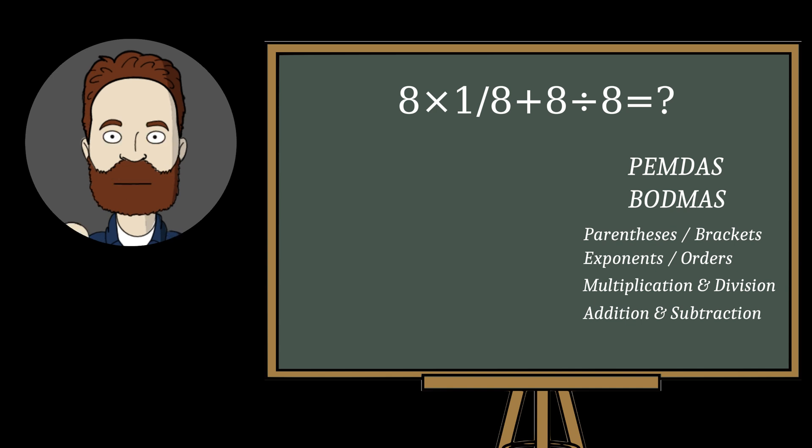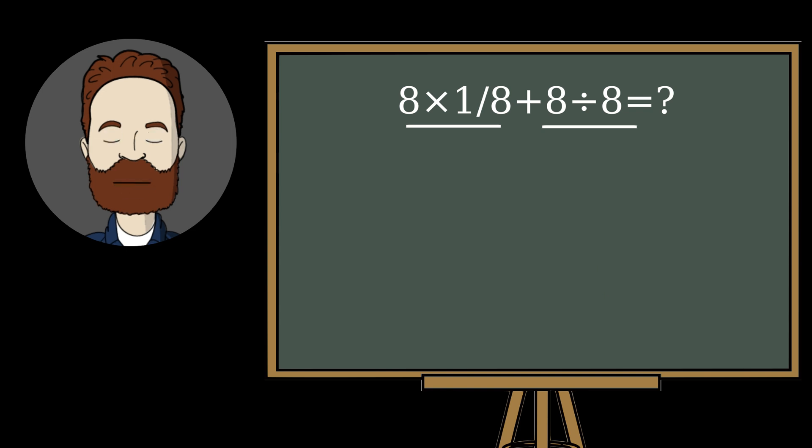Okay, for convenience, you can look at this as two blocks, and following the rule, we start here. We multiply 8 by 1/8, getting 1. Then we calculate 8 divided by 8, that's also 1. And now we simply add the results of the two blocks.